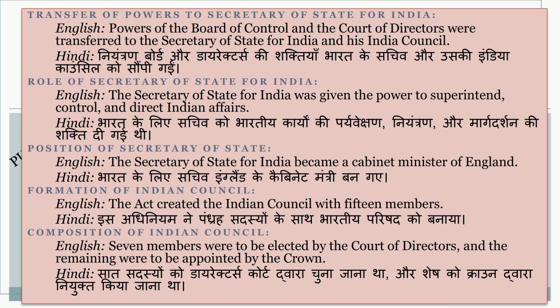Niantran board aur directors ki shaktiyaan Bharat ke sachiv aur unki India Council ko saunpi gayi. The Secretary of State for India was given the power to superintend, control, and direct Indian affairs. Bharat ke liye sachiv ko bhartiya kaaryom ki paryavekshan, niyantran aur margdarshan ki shakti di gayi thi. The Secretary of State for India became a cabinet minister of England. The Act created the Indian Council with 15 members. Is adhiniyam ne pandrah sadasyon ke saath Bhartiya Parishat ko banaya.